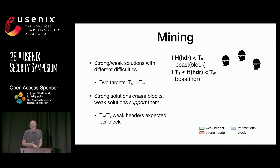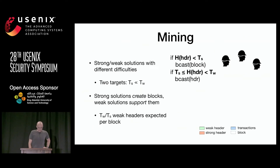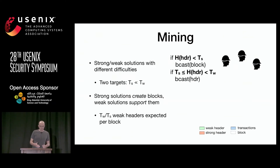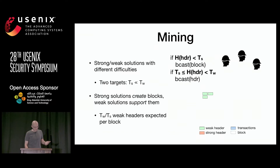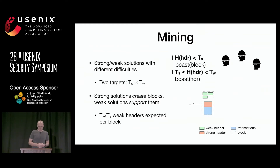The first modification in our protocol is the mining process. We introduce two targets with different difficulties: a strong target and a weak target, where the strong target is much harder to satisfy. If the hash of a block header is less than the strong target, the miner propagates the full block. If it falls between the two targets, the miner broadcasts just the header. It is much easier to find these weak headers than strong solutions — the expected number of weak headers is proportional to the ratio of the two targets. When a miner finds a strong solution, the block contains transactions plus all weak headers pointing to the same previous block.